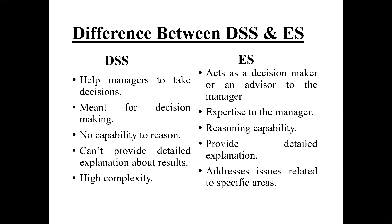Now let's talk about the difference between DSS and expert systems. DSS stands for Decision Support System. How are they different from each other? DSS helps a manager to take decisions. The expert system, on the other hand, is itself a decision maker — the system thinks like a human brain and can act as an advisor to a manager.